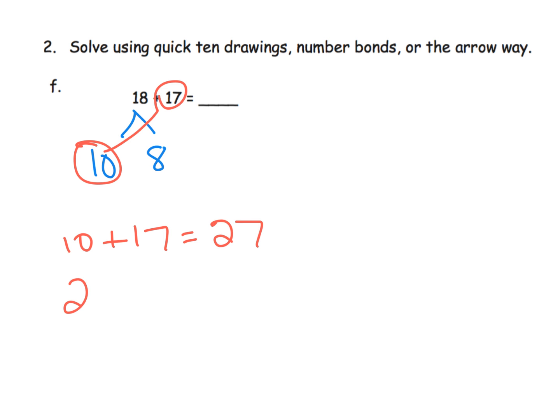Then I'm going to take that 27 and I'm going to add in the 8 because we still have the 8 there. And 27 plus 8 gives us 35. And that's our answer.